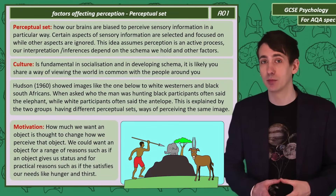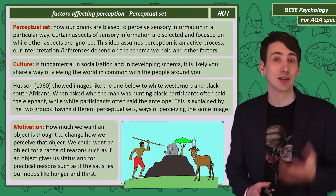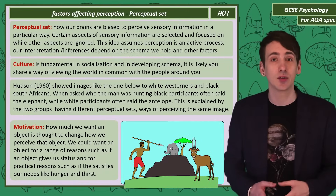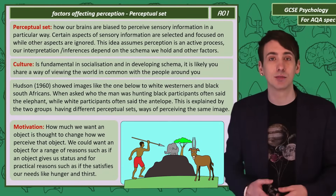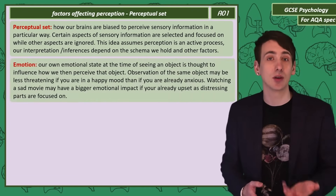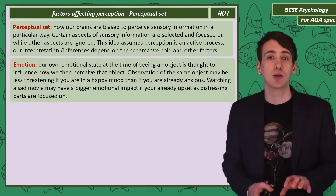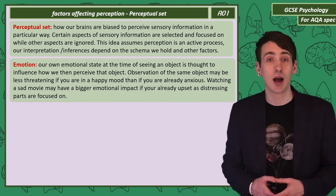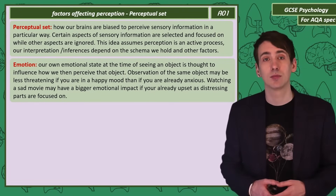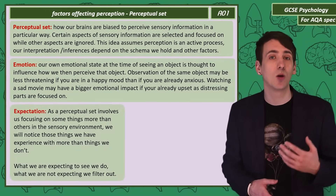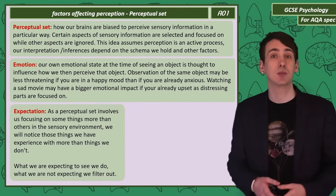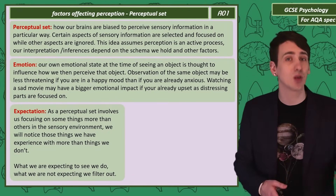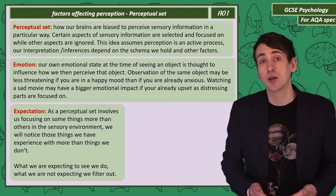Motivation is thought to influence our perceptual set. If we want an object, it will be highlighted in our perception. Our motivation might be to satisfy basic needs like hunger or thirst, or because the object gives us status. Our emotional state is also thought to influence how we perceive the world — for example, you might perceive someone's body language as aggressive if you're already in a bad mood, or a movie as particularly sad if you're depressed. Our expectation of what we're about to perceive also influences what we do actually perceive: we focus on what matches our expectations and filter out what we're not expecting.